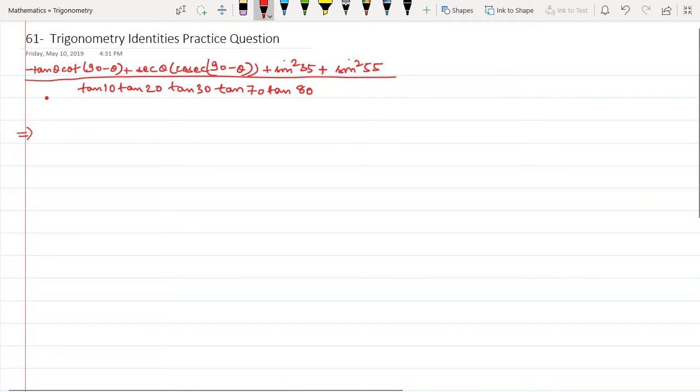This question uses the identities: sine theta equals cos(90 - theta) and cos theta equals sine(90 - theta). So tan theta multiplied by cot(90 - theta) becomes tan theta multiplied by tan theta, which is tan squared theta. Plus, I have sec theta multiplied by sec theta, because cosec(90 - theta) equals sec theta.